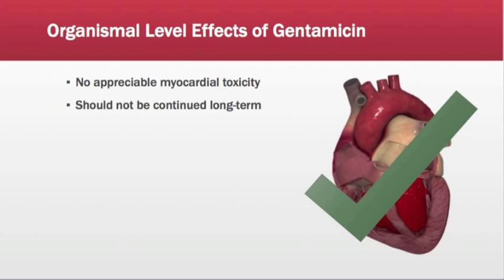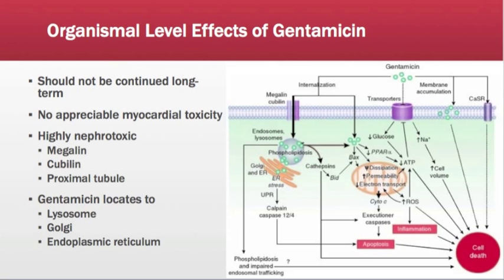Gentamicin has no appreciable myocardial-specific toxicity. It does, however, have serious side effects and should not be administered on a long-term basis. In fact, some sources recommend that administration should be stopped after just one day. The warning against long-term use is due to the acute nephrotoxicity of gentamicin. While most cells of the body do not have transporters for gentamicin, the cells of the brush border of the proximal convoluted tubule of the nephrons have proteins called megalin and cubilin that form an endocytic complex that transports gentamicin.